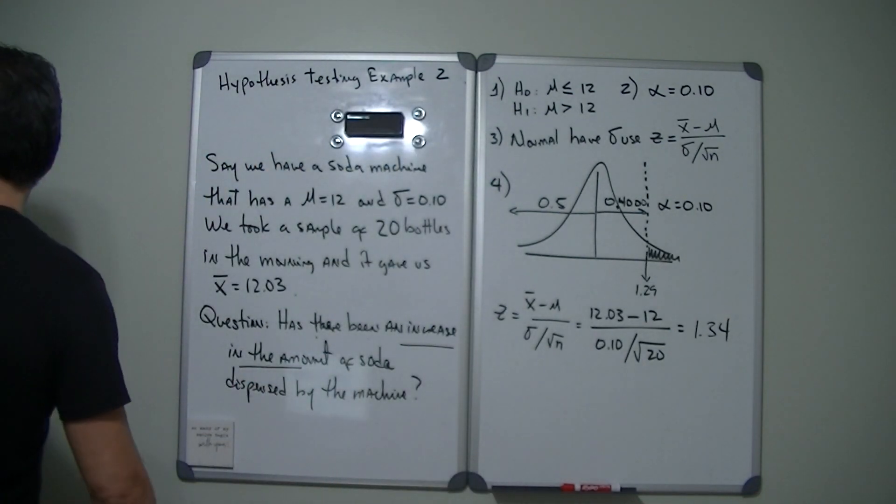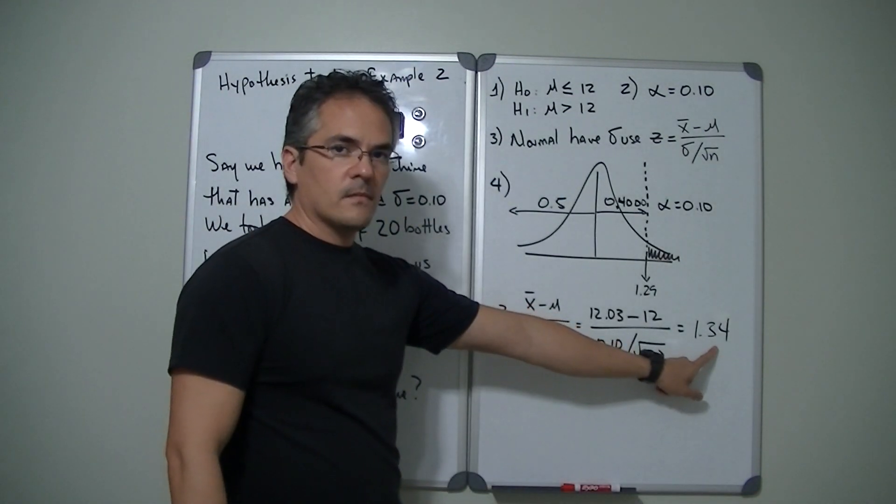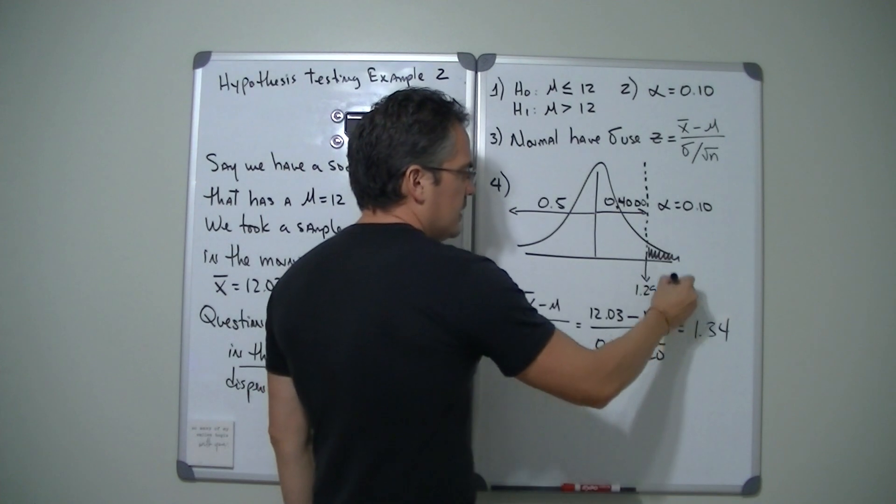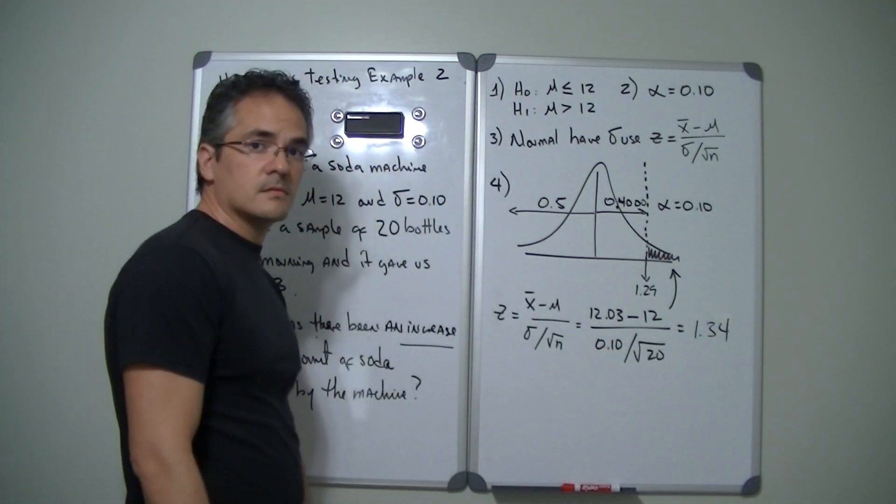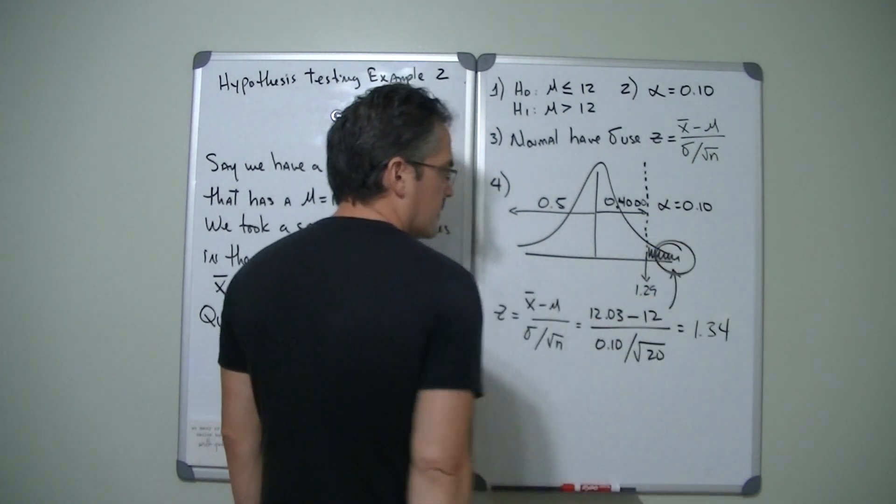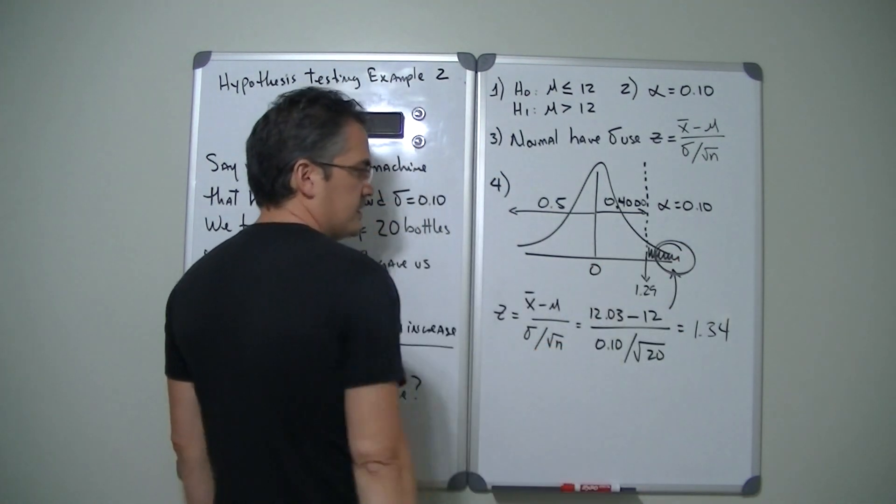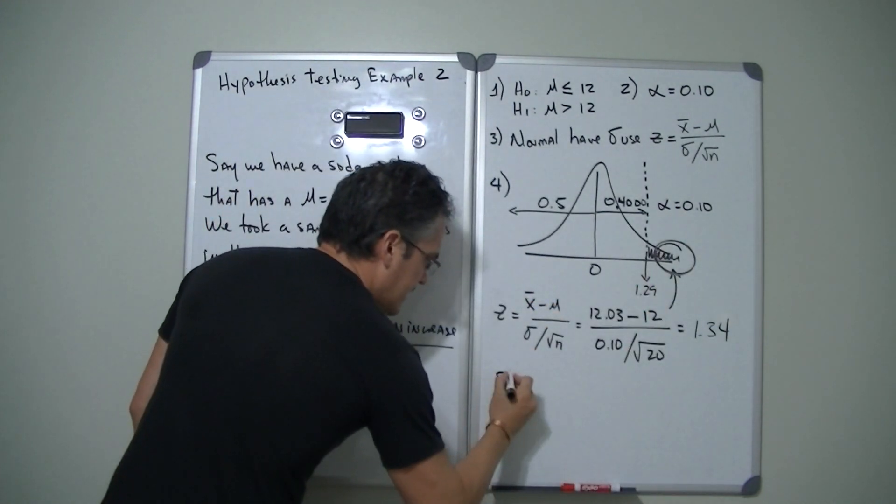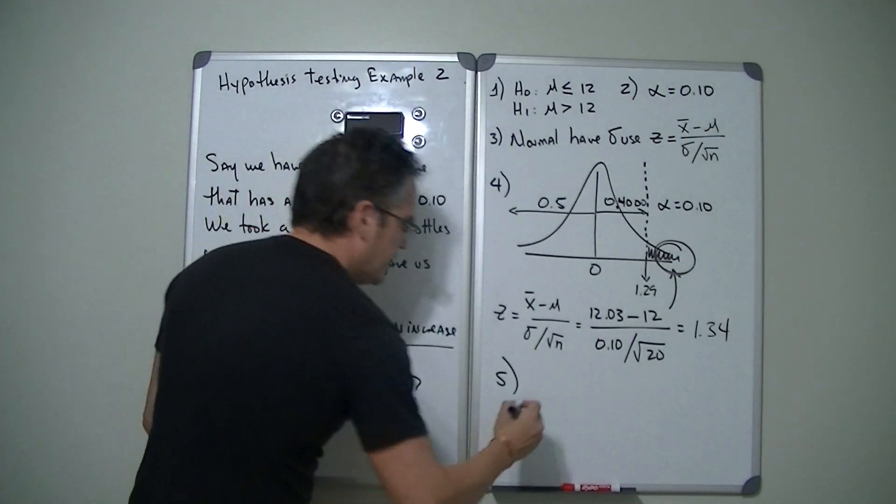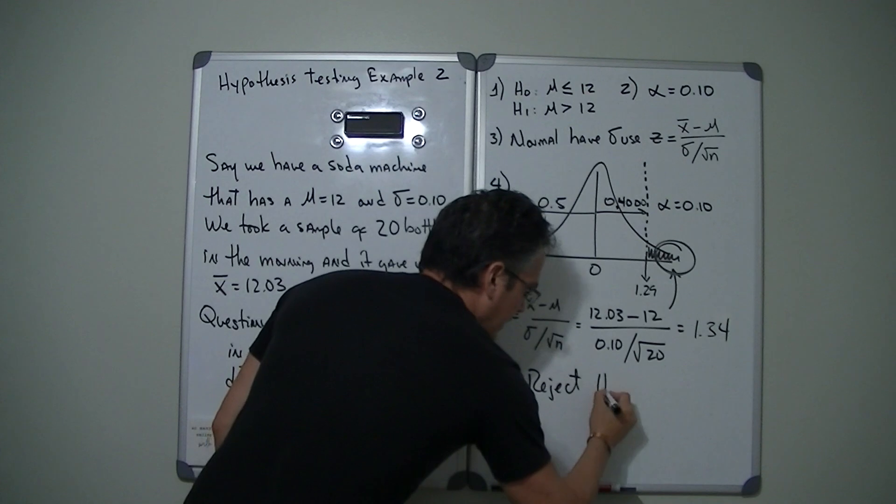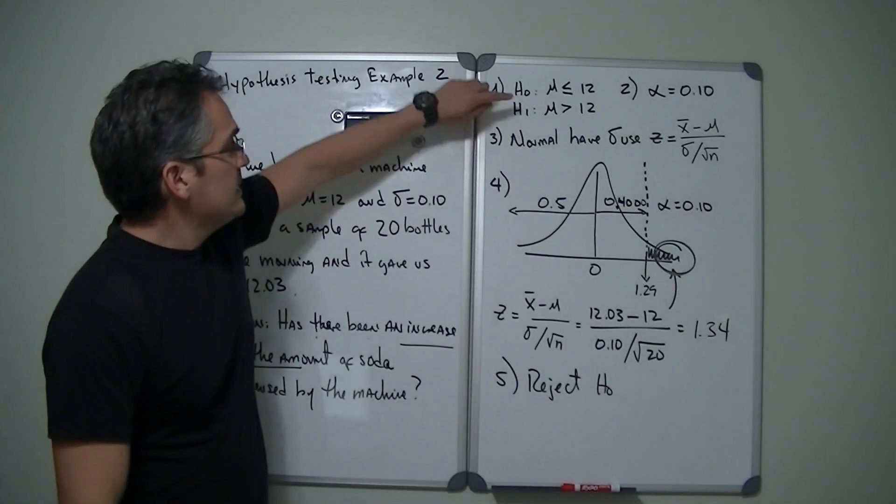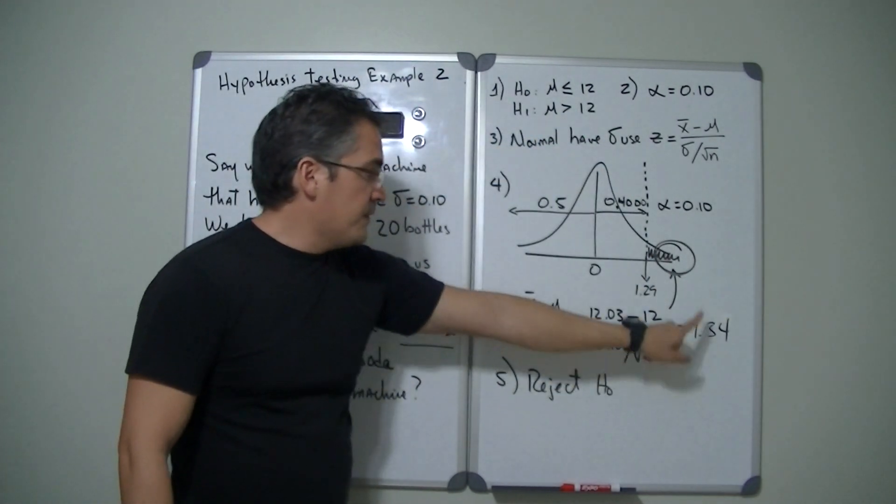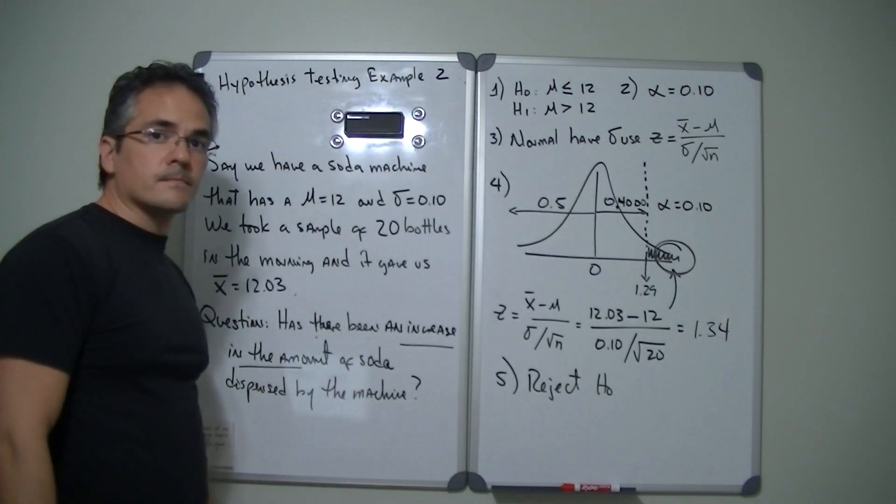All right, notice that this 1.34 is to the right of 1.29, so this 1.34 is on this side of the curve. It's on this side because it is to the right of 1.29, zero being the center. As a consequence of that, because this is on the outside, for step number five of hypothesis testing we're going to say we reject H0. So notice that H1 seems to be correct right now. It's greater than because 1.34 is greater than.